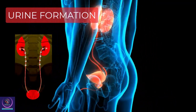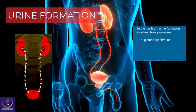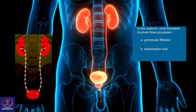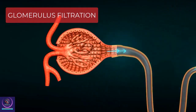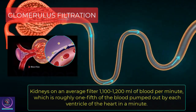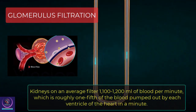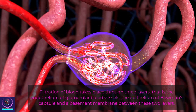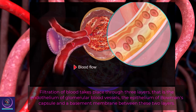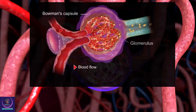Urine formation occurs in the nephron and involves three steps: glomerular filtration, reabsorption, and secretion. The first step is the filtration of blood, carried out by the glomerulus and called glomerular filtration. Kidneys filter approximately 1100 to 1200 milliliters of blood per minute, roughly one-fifth of the blood pumped by each ventricle per minute. Filtration occurs through three layers: the endothelium of glomerular blood vessels, the epithelium of Bowman's capsule, and a basement membrane between these two layers.